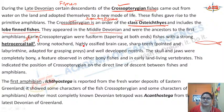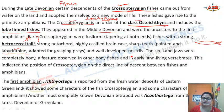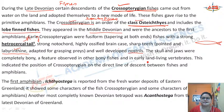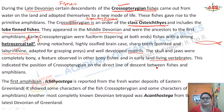The crossopterygian fishes have a heterocercal tail in which the vertebral column turns upward into the dorsal lobe, a strong notochord, and highly ossified brain case. They also have sharp teeth with labyrinthine character and well-developed nostrils. As they evolved to adapt to land, they developed nostrils so that they could breathe in and out. Their skull and jaws were completely bony — a feature observed in land-living vertebrates.